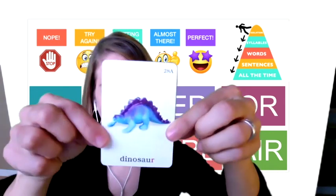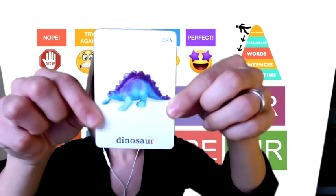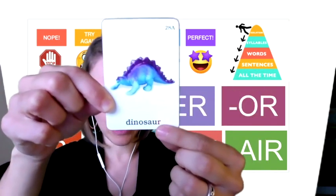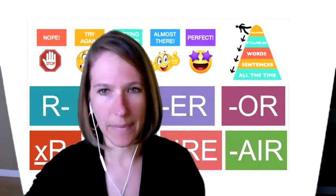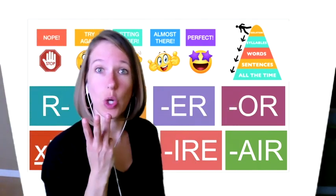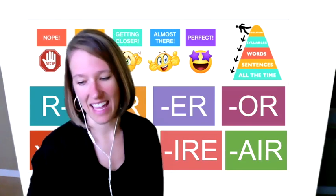Here we go. Our next one is dinosaur. At the end there, it's spelled with A-U-R, but I hear OR when I say that word. Dinosaur has an OR at the end.